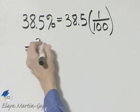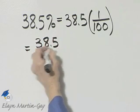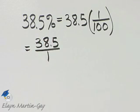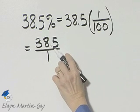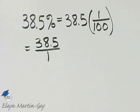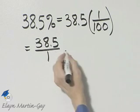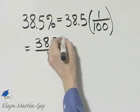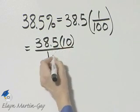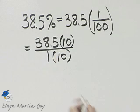So I have 38 and 5 tenths over 1, and that's not a very good format. We do not like to have a decimal number as a numerator or denominator of a fraction, so let's go ahead and take care of that by multiplying the numerator and also the denominator by 10.